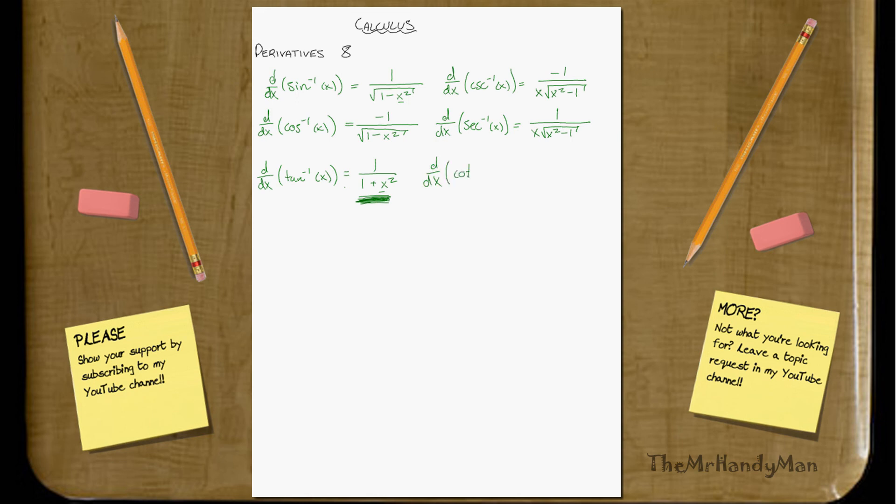All right, well, d/dx of cotangent negative 1 x. That one equals negative 1 over 1 plus x squared. Notice the similarities here as well.